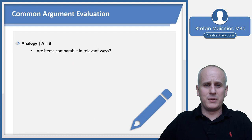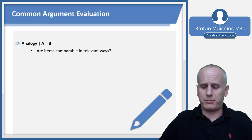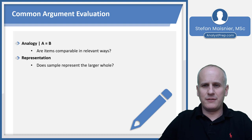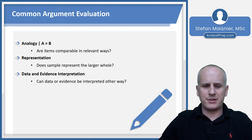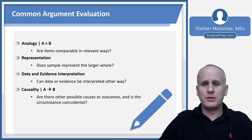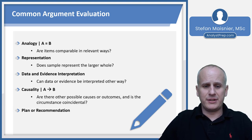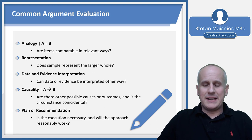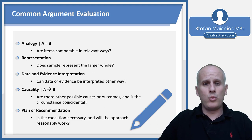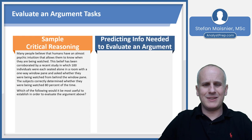For common argument types: in an analogy, A equals B, and to evaluate it, ask whether the items are comparable in relevant ways. For representation, ask whether the sample represents the larger whole. For data and evidence interpretation, ask whether the data can be interpreted another way. For causalities, determine if there are other possible causes, or if the circumstance is merely coincidental. For plan or recommendation-based arguments, find information to help answer if the plan is necessary and will it reasonably accomplish the goal.